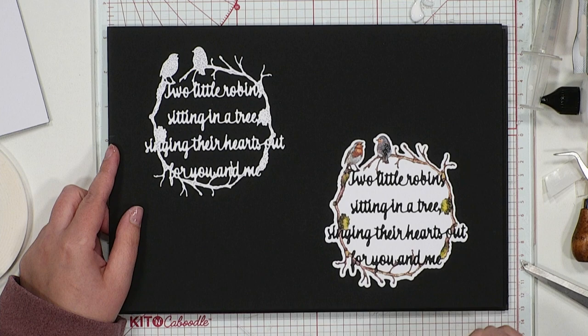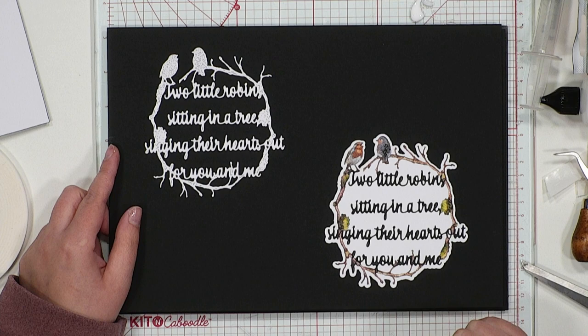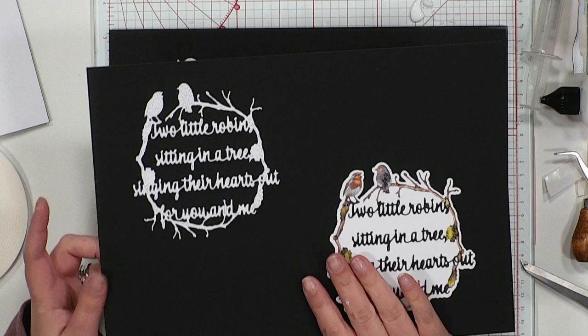Love the fact you've got different shapes within these sentiments, so lovely for a topper, lovely for an aperture as well. Two little robins sitting in a tree, singing their hearts out for you and me. Just glorious.